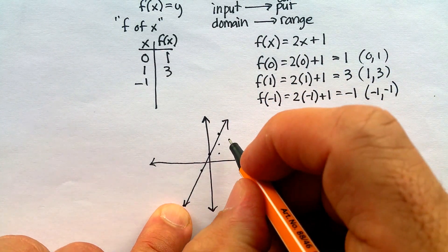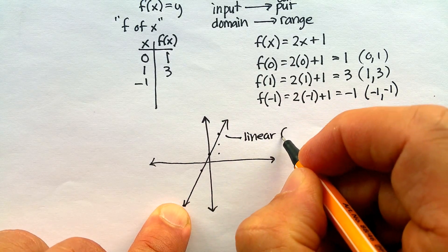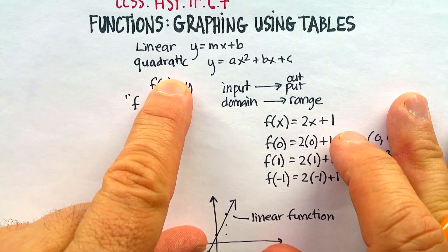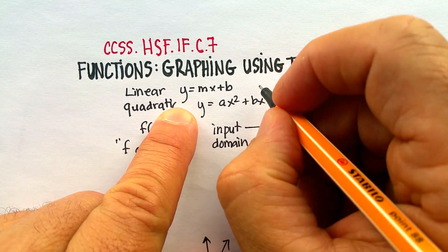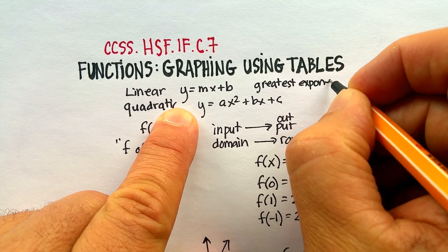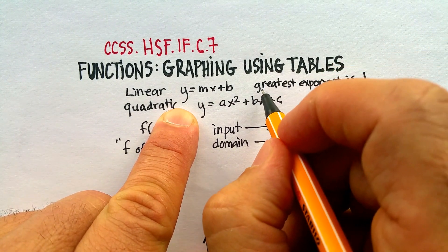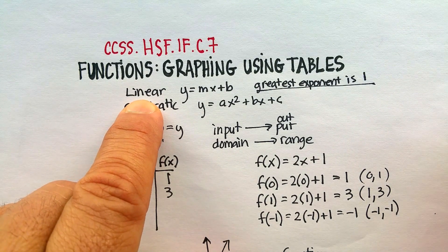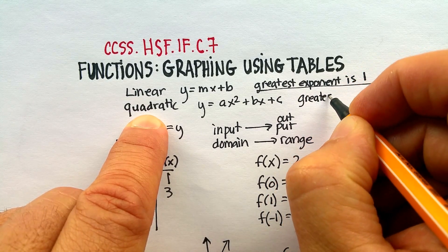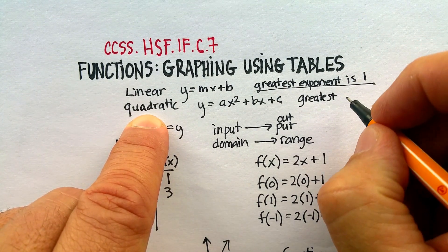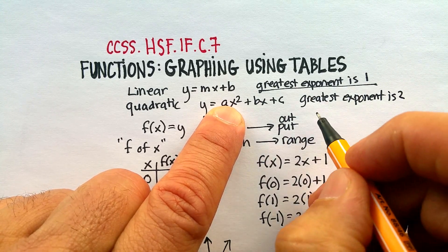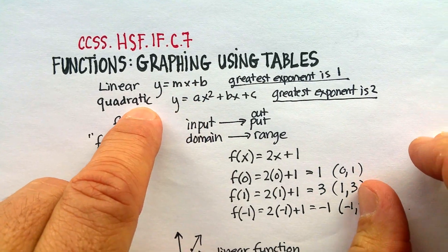Now, why is this a linear function? What makes this a linear function is a good question. A linear function, if we go back up to the top here, is where the exponent, the greatest exponent, is a 1. And that would make it a linear equation or a linear function. In a quadratic function, the greatest exponent is 2. And we're going to actually graph that, and you'll see what it does to the line. So the greatest exponent, in this case, would be 2. And that would make it a quadratic function.